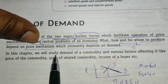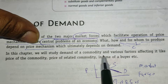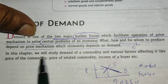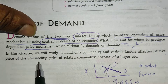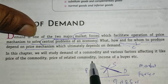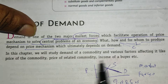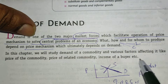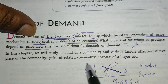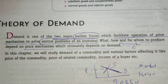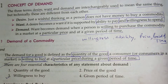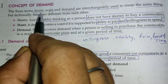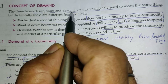In this chapter, we will study the demand of a commodity and various factors affecting it, like the price of the commodity, price of related commodities, and income of the buyer. Now, the concept of demand — there are three terms: desire, want, and demand.